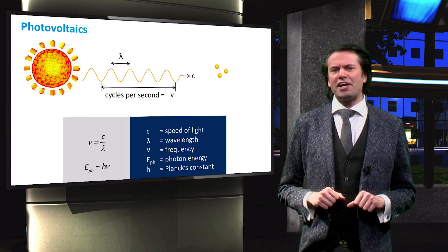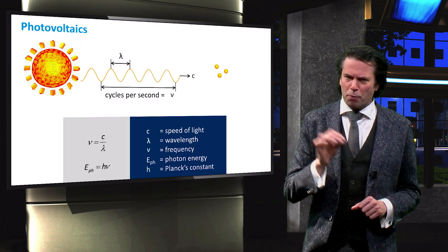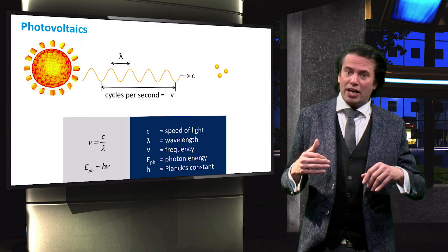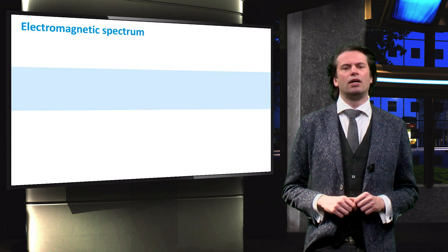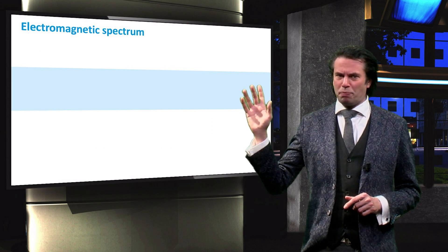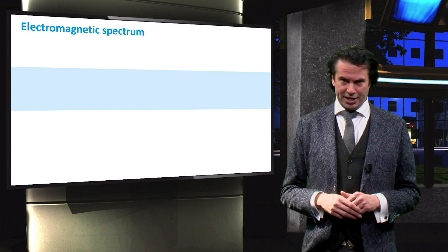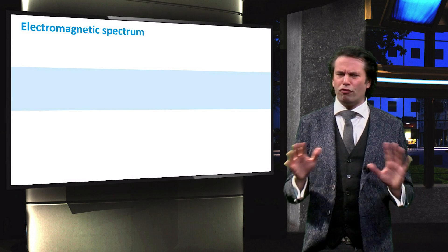The wavelength and the frequency of light are defining properties that dictate how electromagnetic radiation interacts with matter. Let's look at the spectrum of electromagnetic radiation to get a better understanding of these properties.